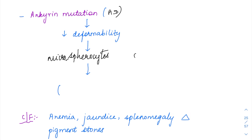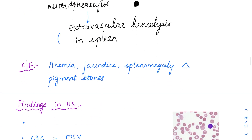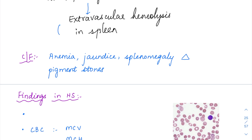Microspherocytes: rather than being biconcave, the RBCs become smaller in size, their central pallor is absent, and the entire RBC appears pink in color. Any difference in the shape of the RBCs means they cannot pass through the splenic sinusoid and cannot deform, resulting in extravascular hemolysis in the spleen. The clinical features of hereditary spherocytosis form a triad of anemia, splenomegaly, and jaundice.